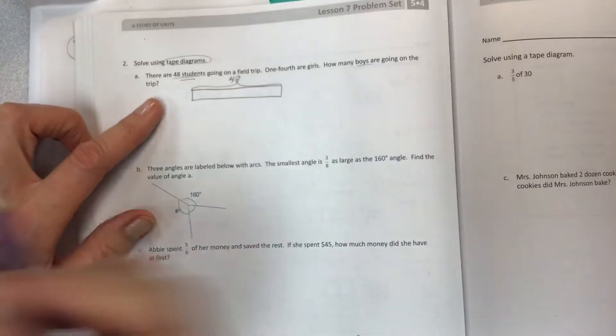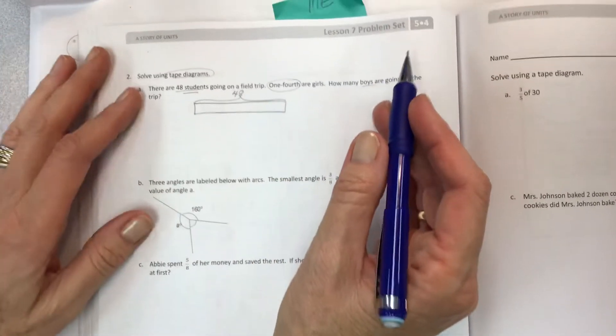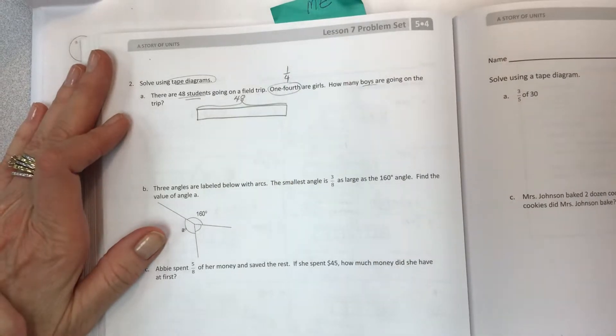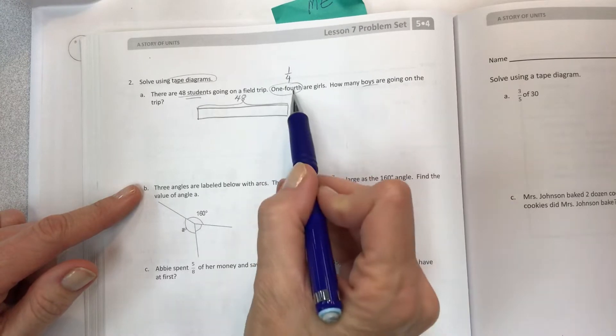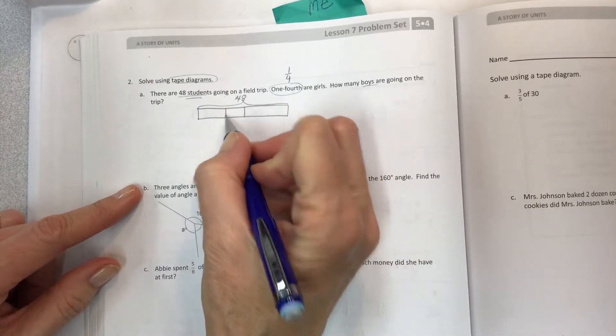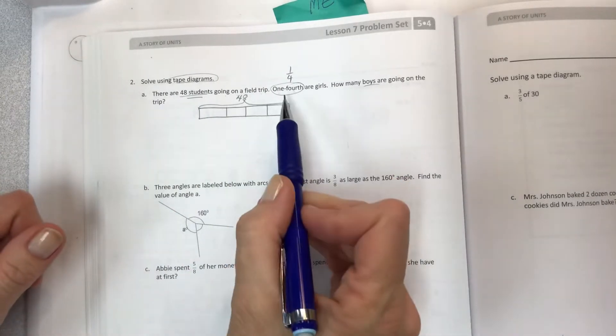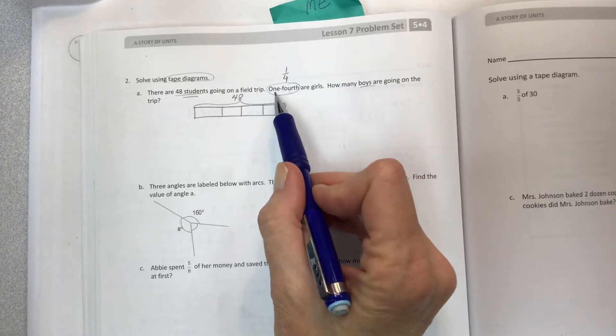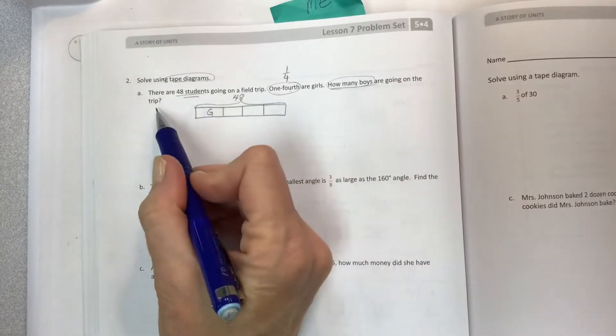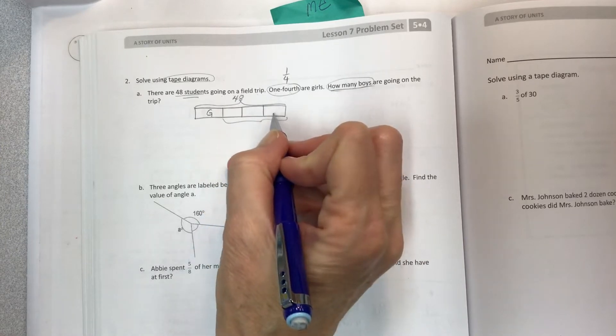It sounds like we know the total, so let's draw that tape diagram and put the 48 students on top. Sometimes they're going to give you a fraction in word form, so you need to be able to see what it is. The denominator is telling you the number of pieces that you need to put into your tape diagram. The question they're asking is not about the fraction. It says one-fourth are girls, how many boys are going on the trip? So that's three-fourths of 48.